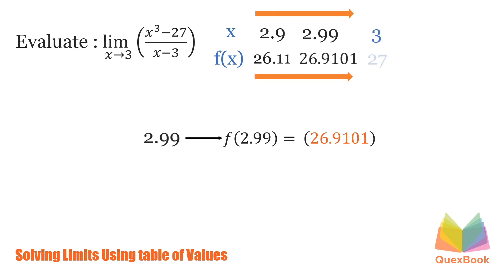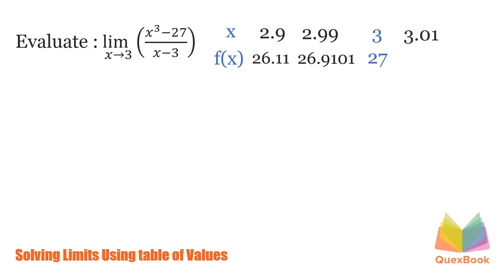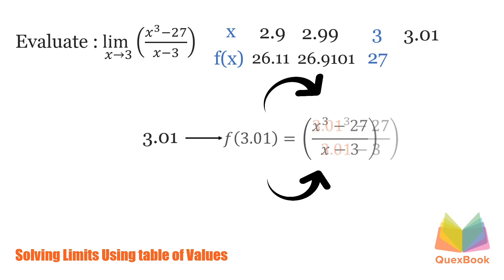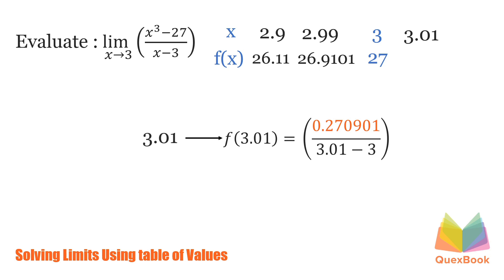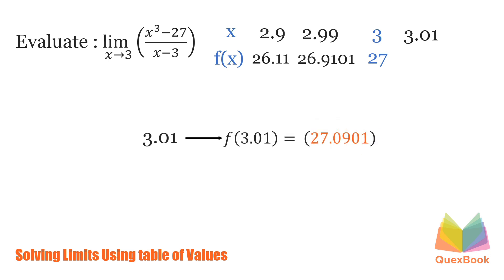Now we can see where the pattern leads us, but let's still try the other side. Let's plug in 3.01. 3.01 cubed minus 27 over 3.01 minus 3. 3.01 cubed is 27.270901, minus 27 is 0.270901. 3.01 minus 3 is 0.01. Dividing the function, we'll have 27.0901.